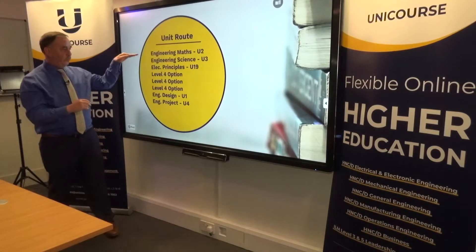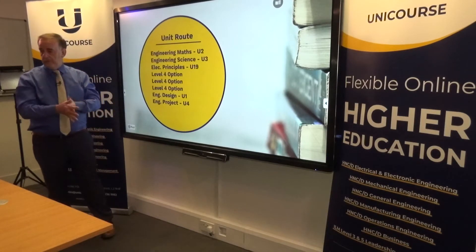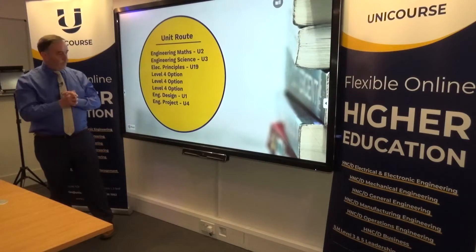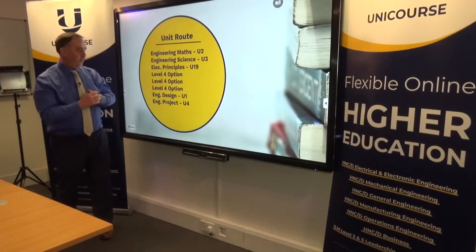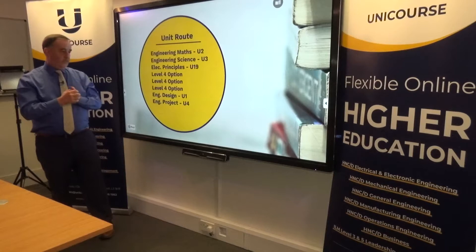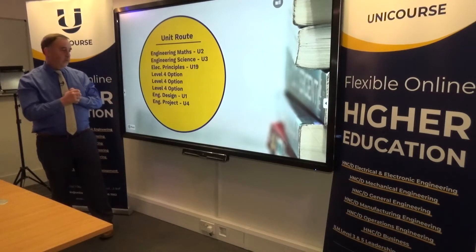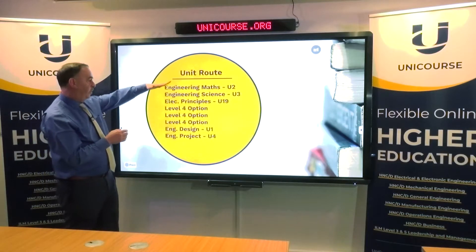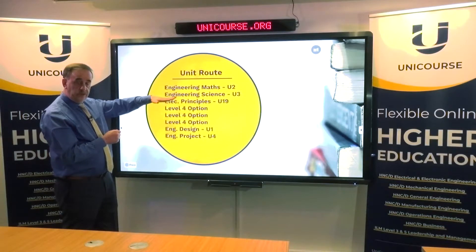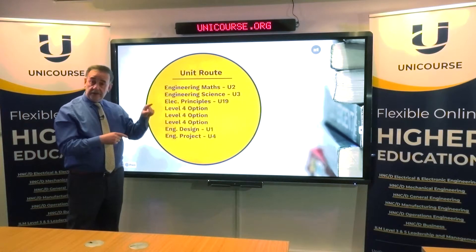Let's look at the preferred route through these modules. We want you to start on Engineering Maths to give you that fundamental knowledge you need, and then jump into Electrical and Electronic Principles — the specialist mandatory unit. At that point you will have three modules under your belt.